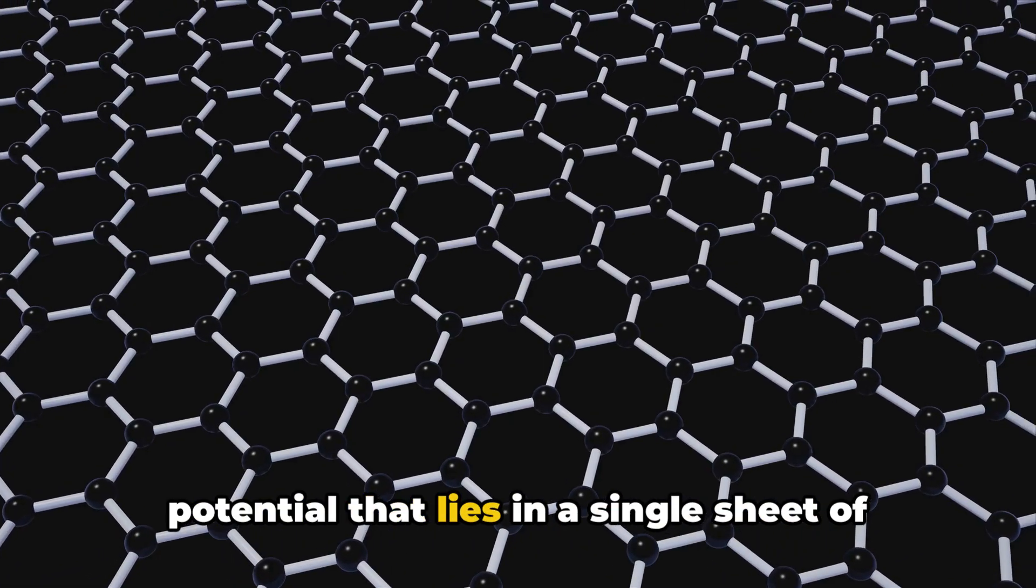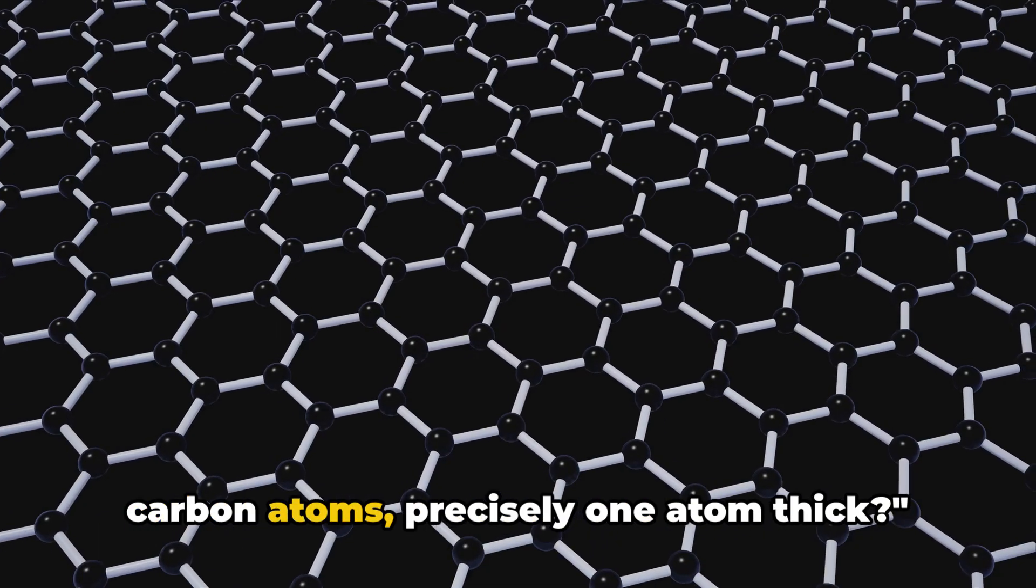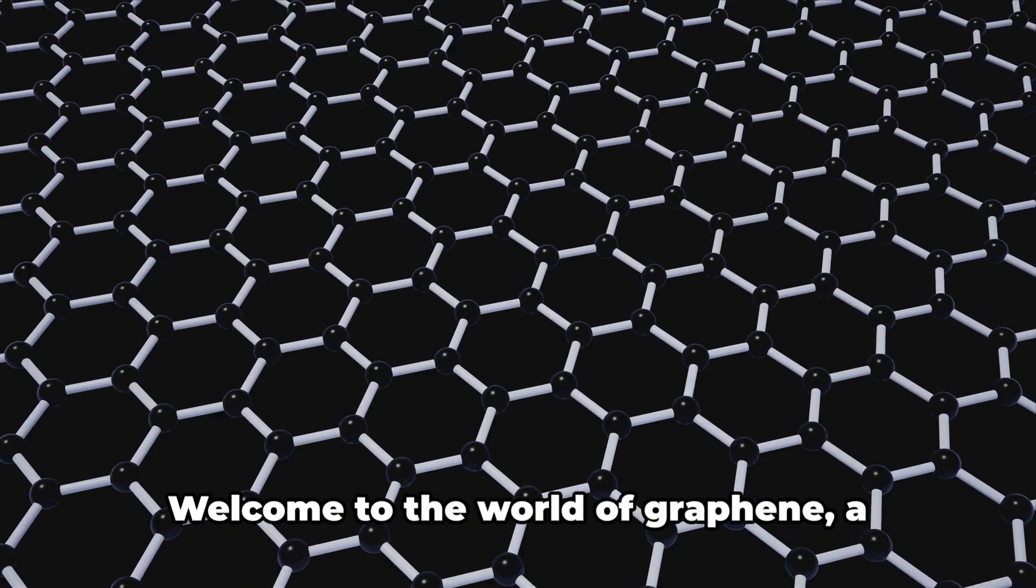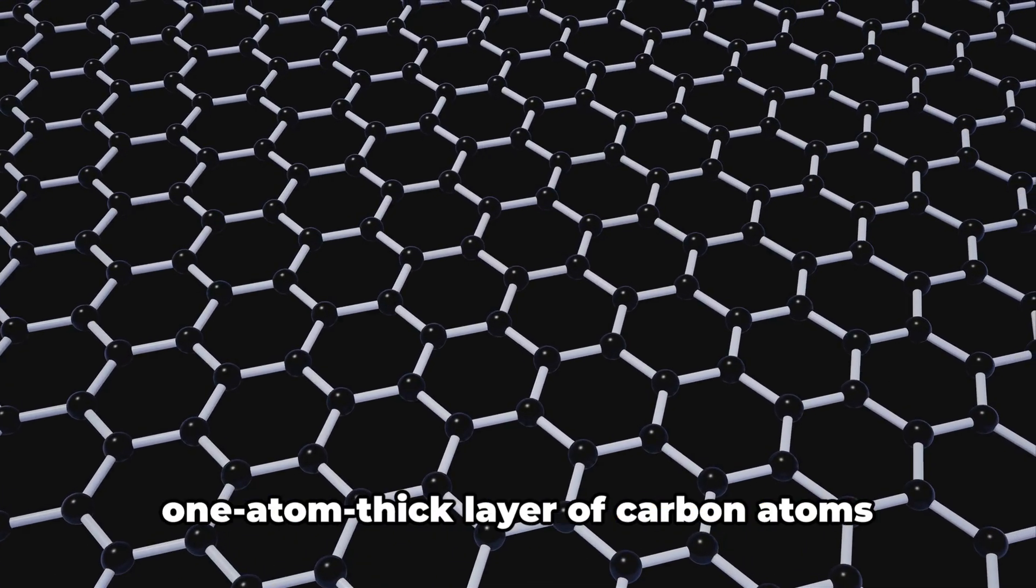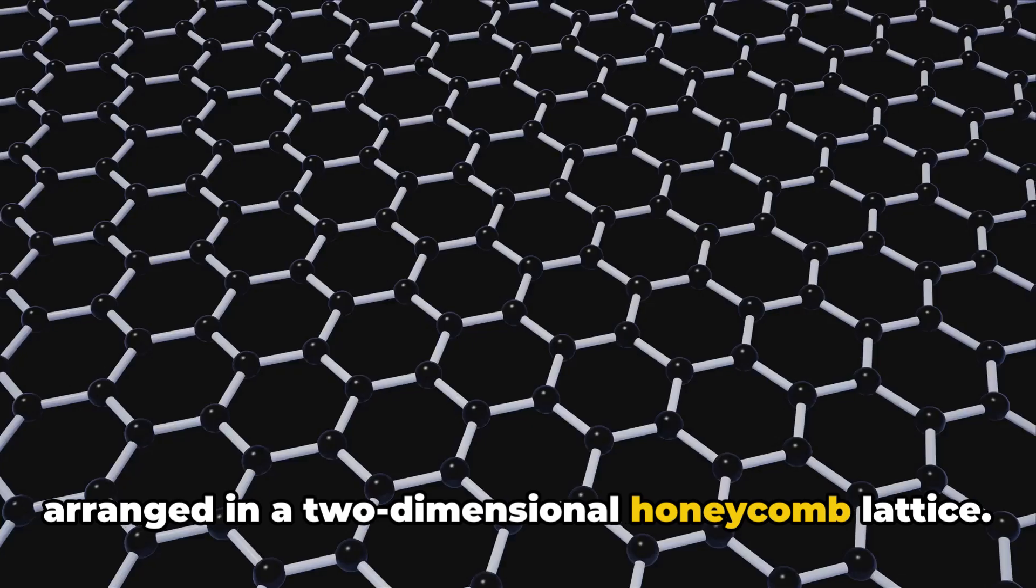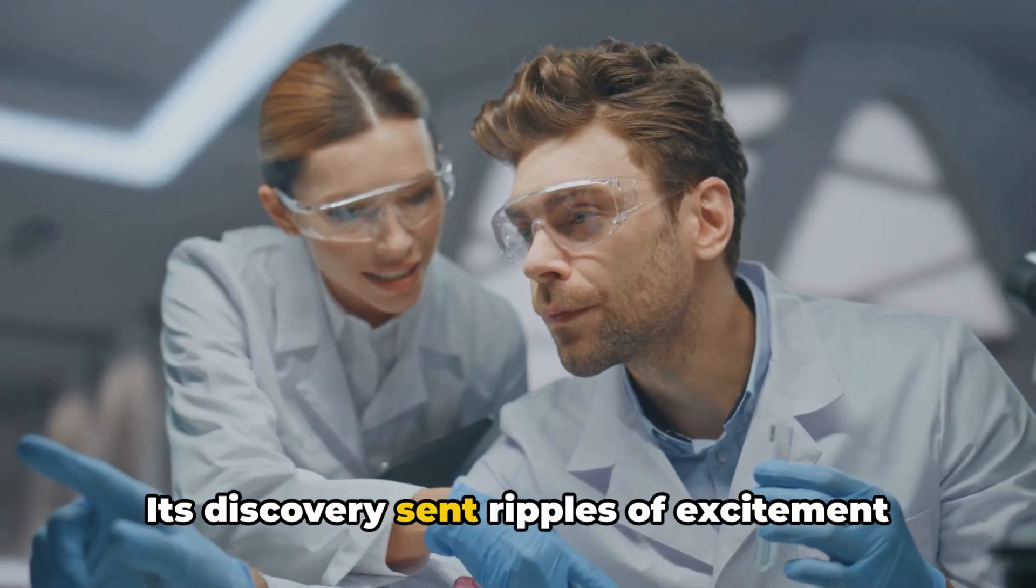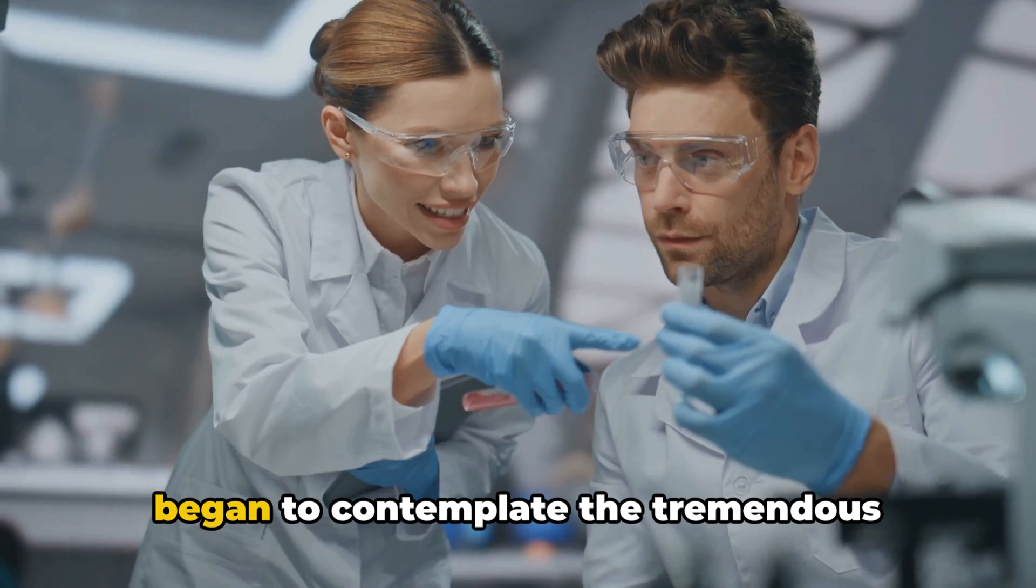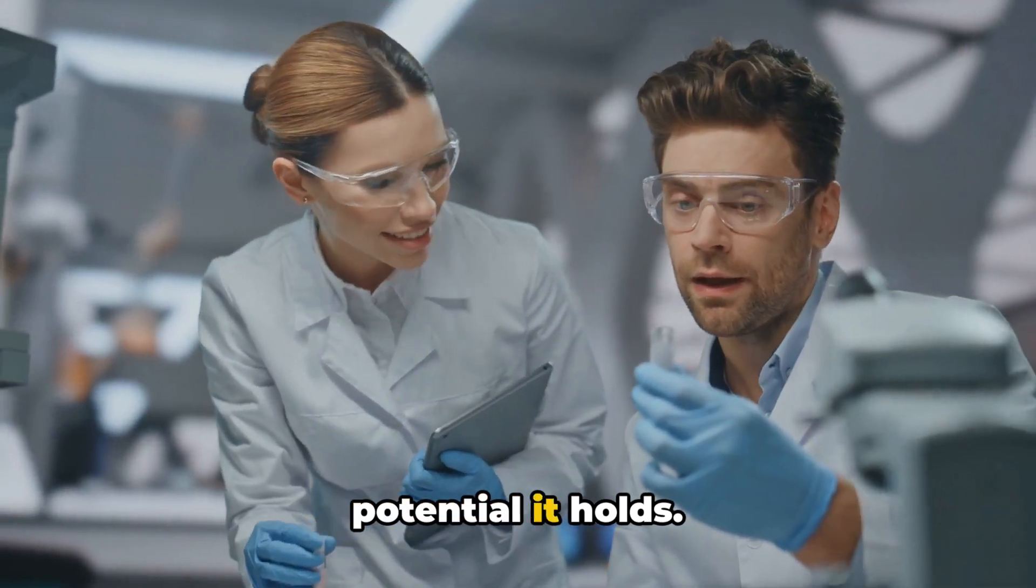Have you ever wondered about the potential that lies in a single sheet of carbon atoms, precisely one atom thick? Welcome to the world of graphene, a one-atom-thick layer of carbon atoms arranged in a two-dimensional honeycomb lattice. Its discovery sent ripples of excitement through the scientific community as they began to contemplate the tremendous potential it holds.